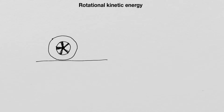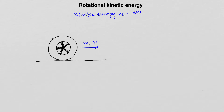Let's first talk about rotational kinetic energy. Consider this car wheel which is moving to the right with some velocity v. We know that since the car wheel has some mass m, the car wheel will possess kinetic energy, which is calculated as the product of the mass of the wheel times the speed squared divided by 2.